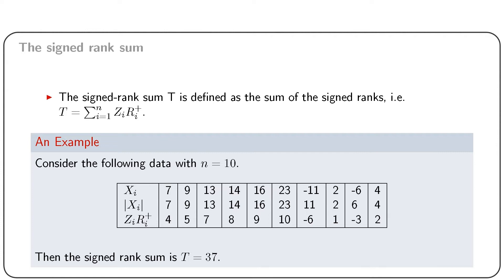Wilcoxon signed rank test is based on the sum of the ranks of the positive observations. Formally, the signed rank sum T is defined as T = summation i from 1 to n of zi multiplied by r_i+. It is often a matter of confusion that only positive observations are to be ranked, but this is not true. In the following example, we shall explain the difference.